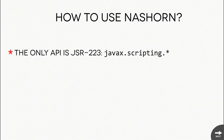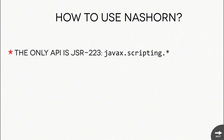An interesting thing - when I initially started working on this presentation, I tried to figure out what script engines were available on my machine. I also found that Apple has AppleScript, the little script used to automate parts of your workflow - you can start applications, stop applications, and do different things. AppleScript also provides an implementation for JSR-223, so you can actually run AppleScript from your Java application.